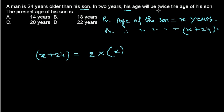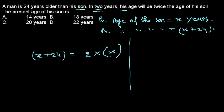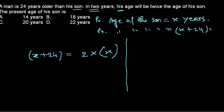Wait — there's an important correction here. The question says 'in two years,' so we cannot just use the present ages directly. After two years, both the father and son will be two years older. This is the most critical point, and I'll explain why many students make a mistake here.